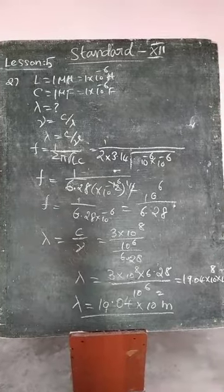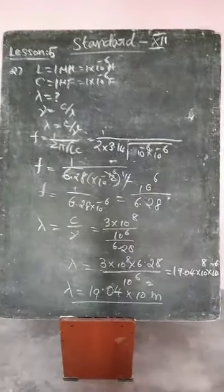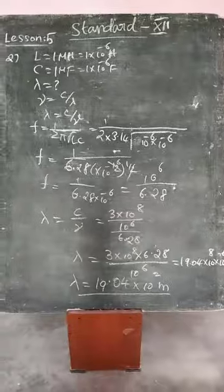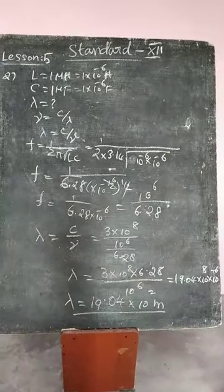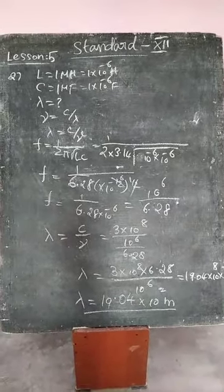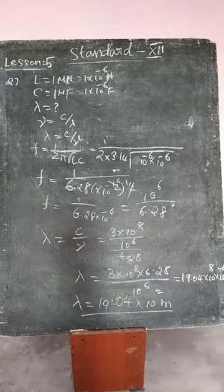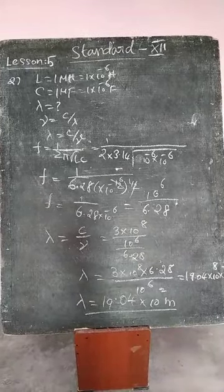Problem 2: A transmitter consists of LC circuit with the inductance of 1 microhenry and capacitance of 1 microfarad. What is the wavelength of the electromagnetic wave it emits?